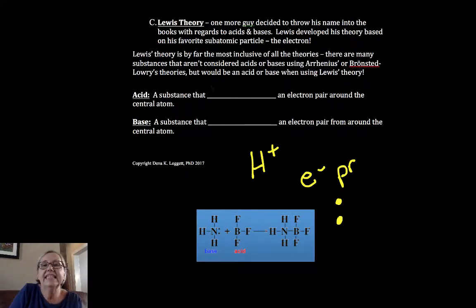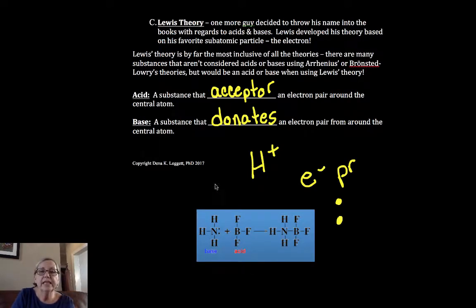A substance has an extra non-bonded pair of electrons. An acid, in this case, is the acceptor of that electron pair. And the base donates the electron pair.